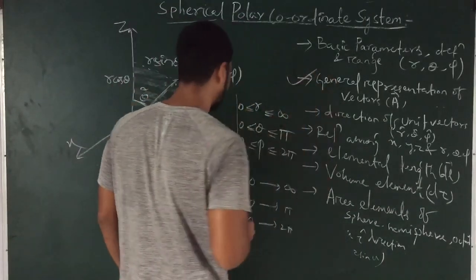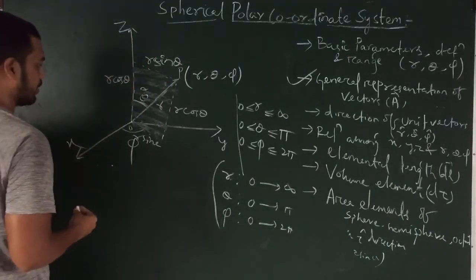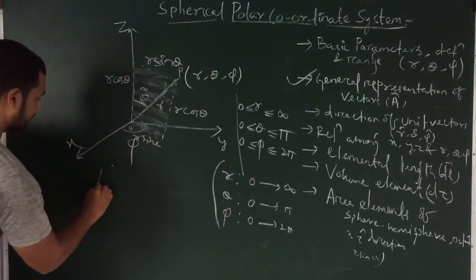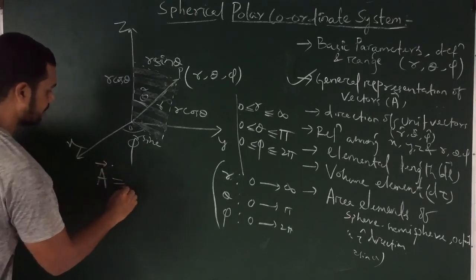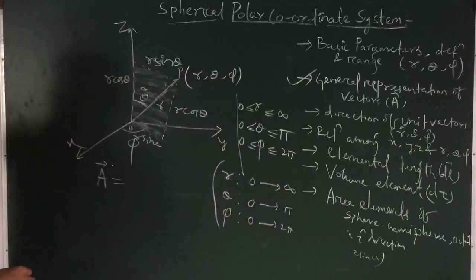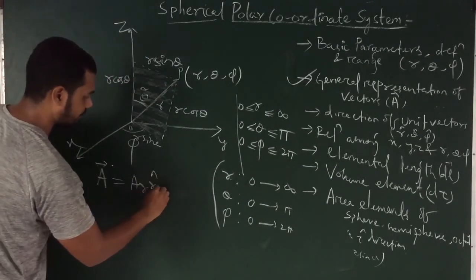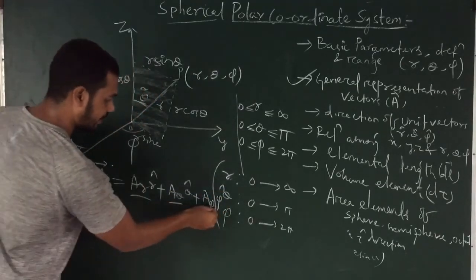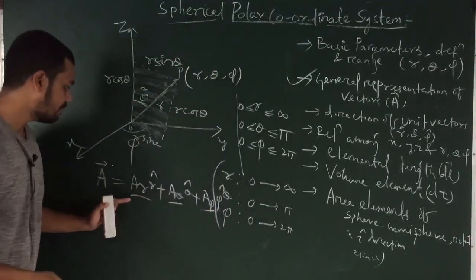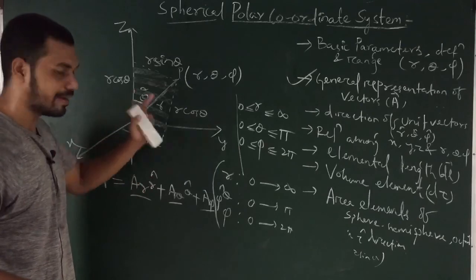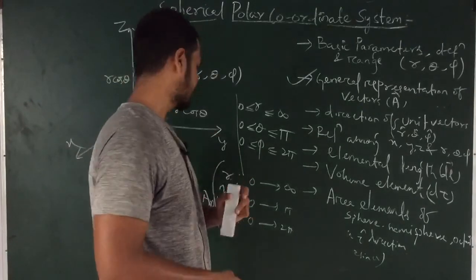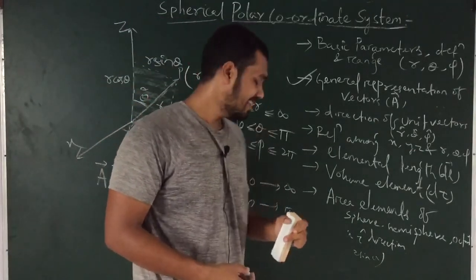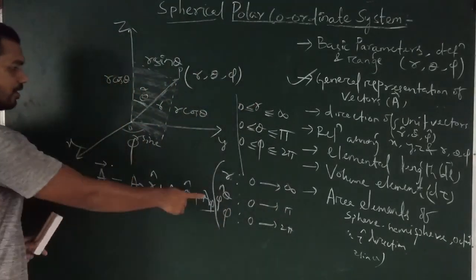Then we will go for the general representation of a vector. In spherical polar coordinates, similar to Cartesian and cylindrical coordinate systems, the general representation of vector A will be: A_r R cap plus A_theta theta cap plus A_phi phi cap. A_r, A_theta and A_phi are the components — the magnitudes of vector A along the R cap, theta cap, and phi cap directions respectively.